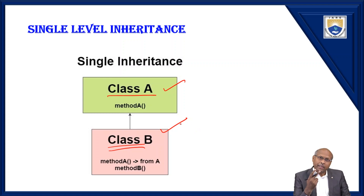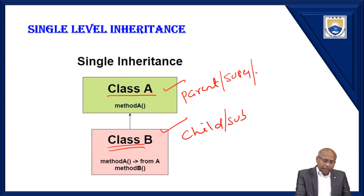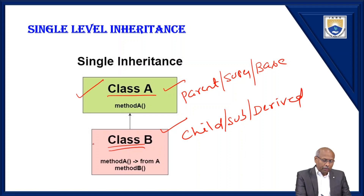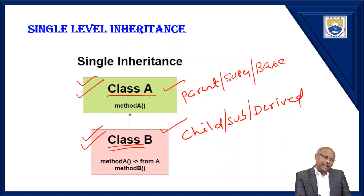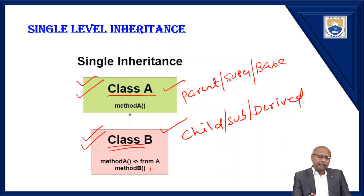When I say single level inheritance, you must always have two classes: one is the parent class, another is the child class. The parent's property will be available to the child. You can also call them super class and sub class, or base class and derived class. If A is the base, B is derived. In class A you can specify a set of methods, and in class B you can also define a set of methods. In addition, class B can get all the public and protected methods of the parent. Private methods will not come to the child. Whenever you want to reuse a resource, always go for the inheritance concept.